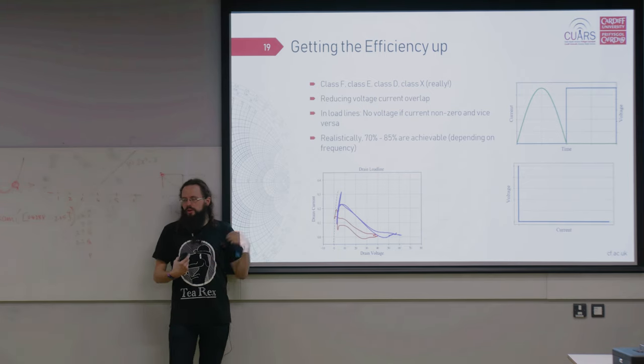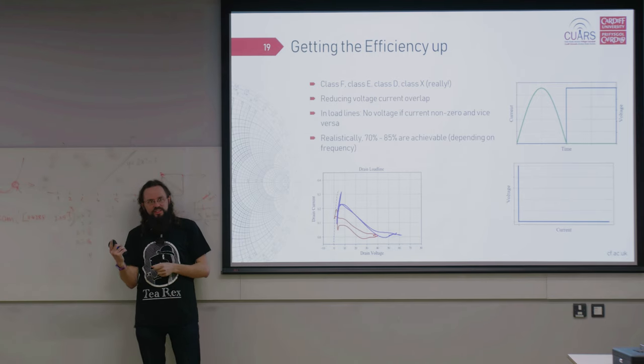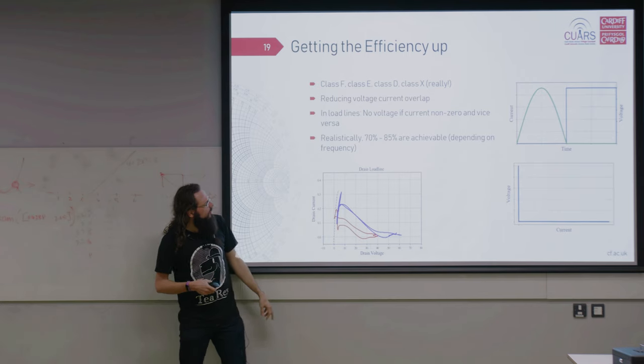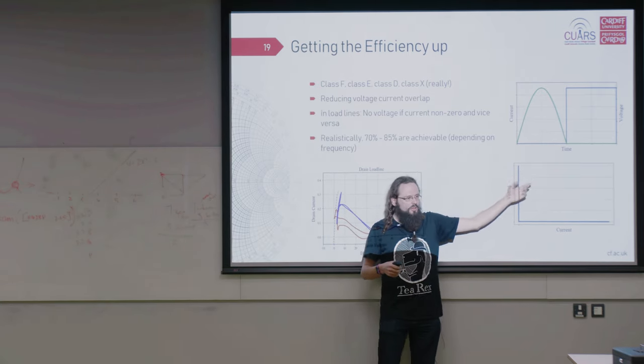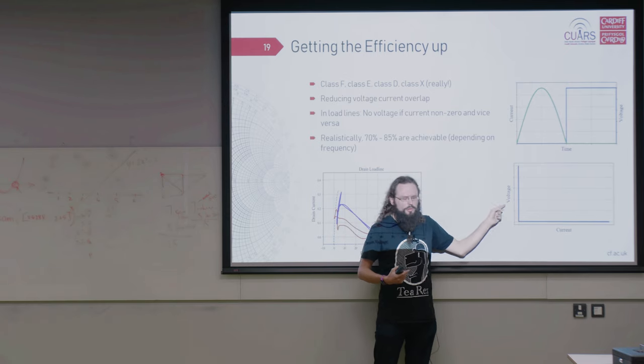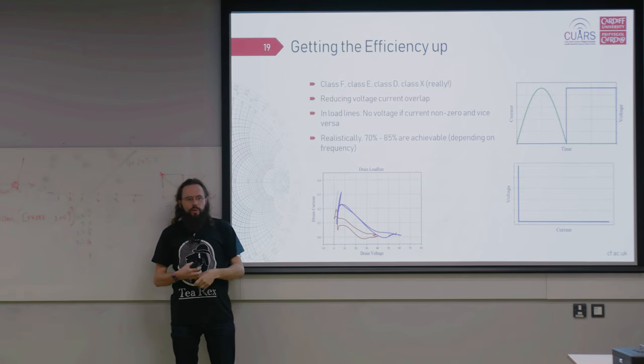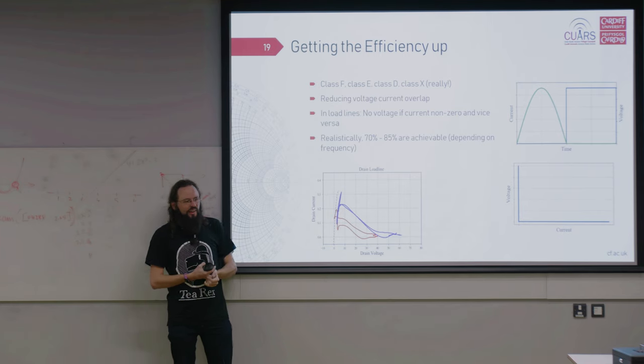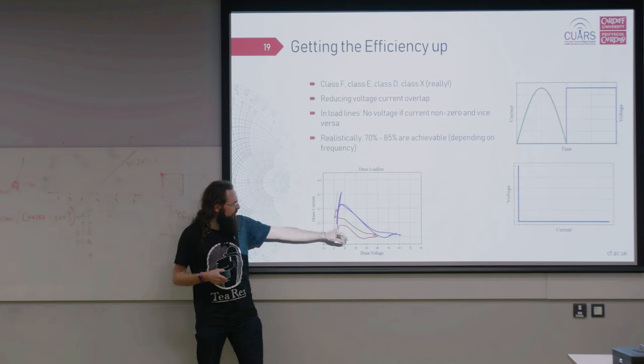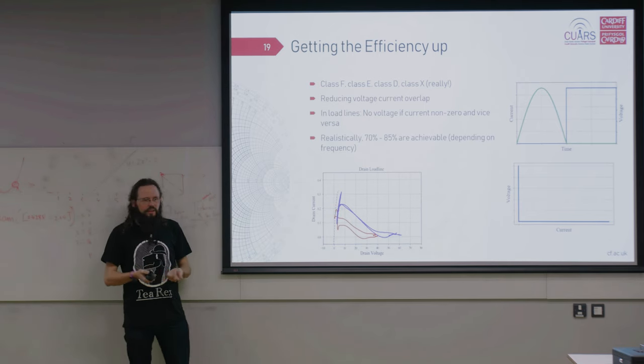One thing that's interesting is I talked about class A and class B and how you get up to 80%. But that's not enough sometimes. Sometimes we need more efficiency. And there's a few classes. But what all of them do is they reduce the voltage and current overlap. You can see here there's no voltage where there's current or the other way around. If you look at that as a load line, it just goes up and along. I mean, they're the wrong way around. But it doesn't really matter because it's the same thing. So if you manage to shape your waveform to not overlap, you get really high efficiencies. And realistically, you can get like 70, 80 to 85%, depending on the frequency. And this is what the measurement looks like. So you can see it moves up here and up. Not quite as perfect as it does in the nice picture over there where it looks like an L. But it is actually what happens.